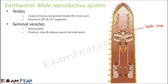Next are the seminal vesicles, which also exist in pairs. They produce, store, and release sperm via the male pores. You can see they also exist in pairs here. Their function is to temporarily store sperm and release it through the male pores.